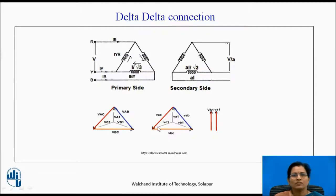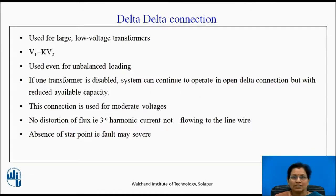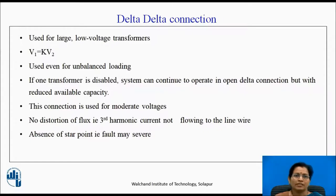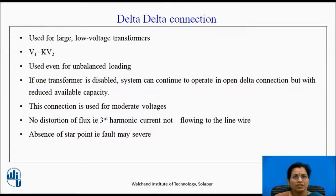From the phasor diagram, both voltages are in phase. If one transformer is disabled, the system can continue to operate in open delta connection but with reduced available capacity. This connection is used for moderate voltages. No distortion of flux — the third harmonic current is not flowing to the line wire. In delta connection, the star point or neutral point is not there, so if a fault occurs, that fault may be severe.